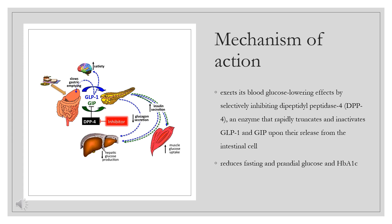The duration of DPP-4 inhibition by Vildagliptin is dose-dependent. Vildagliptin reduces fasting and prandial glucose and HbA1c. It enhances the glucose sensitivity of alpha and beta cells and augments glucose-dependent insulin secretion. Fasting and postprandial glucose levels are decreased, and postprandial lipid and lipoprotein metabolism are also improved.